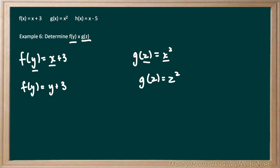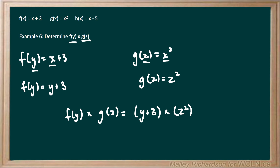Now that we have f of y and g of z, we multiply these two functions together: f of y times g of z. f of y is y plus 3, and g of z is z squared. Using distribution laws, we multiply y by z squared to get y z squared, and then 3 by z squared to get 3 z squared. So f of y multiplied by g of z gives us y z squared plus 3 z squared.